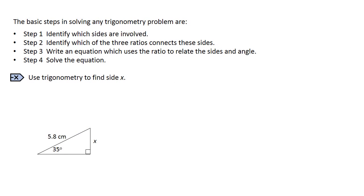The basic steps involved in solving any trigonometry problem are: Step 1, identify which sides are involved. Step 2, identify which of the three ratios connects together these sides. Step 3, write an equation which uses the ratio to relate together the sides and angle. And Step 4, solve the equation.